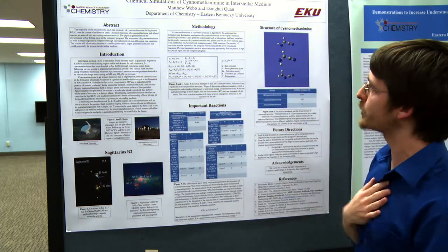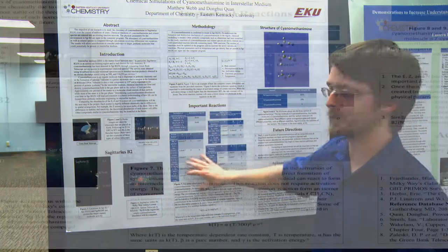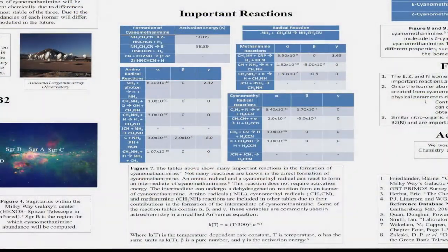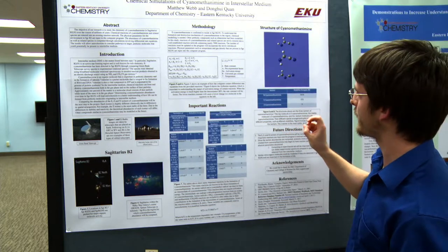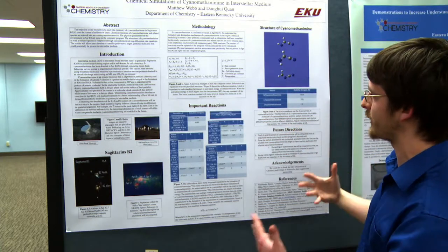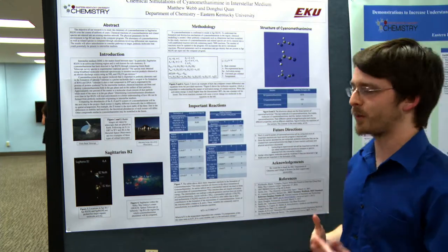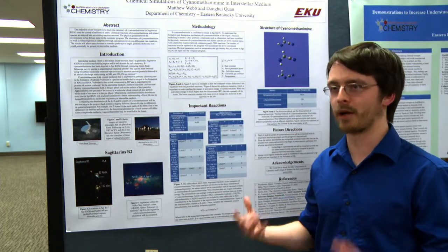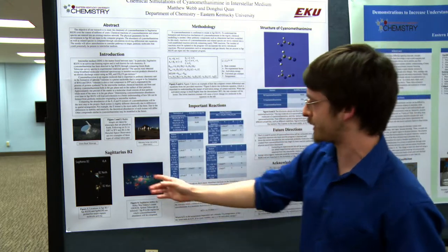What I'm doing is finding reactions in literature and databases and inputting them into our already existing database containing over 7,000 reactions. By doing that, we can piece together how cyanomethenamine is formed in space, and ultimately I want to discover the abundance of cyanomethenamine and its isomers in Sagittarius.